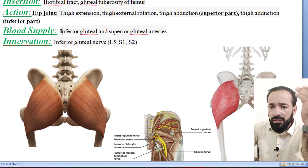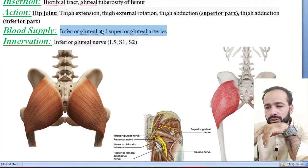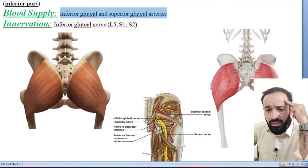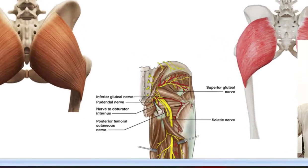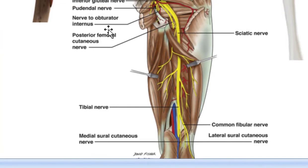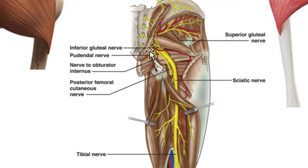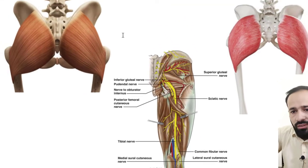What is its blood supply? It is supplied by the inferior gluteal and superior gluteal arteries. And what is its innervation? It is innervated by the inferior gluteal nerve, which comes from branches of L5, S1, and S2. This nerve is responsible for supplying innervation to the gluteus maximus muscle.